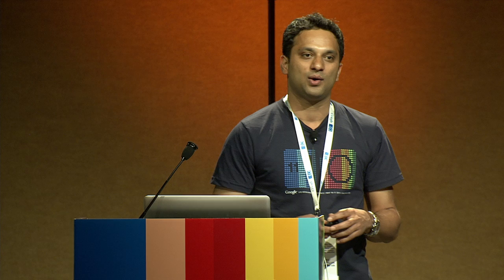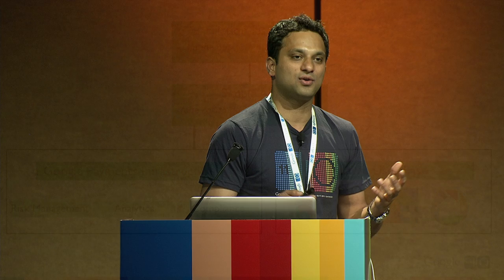You're bringing all of this huge payments infrastructure and a large user base into your app with a simple API. Literally, it's one call to initiate payments and one call to collect it. That's really what we think is the beauty of this platform — one API that hides away all of the payments complexity and delivers to you a large transacting user base from Google. What your users see is a very frictionless UX. Payments should get out of the way as soon as possible. Minimal steps: enter your credentials, pay, and get back to the app. And if they've already paid, they don't have to enter credentials again — it becomes single click.